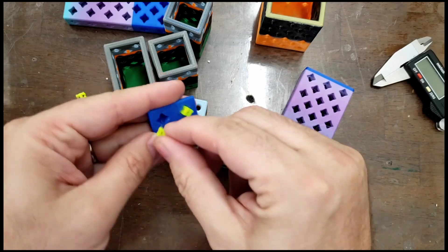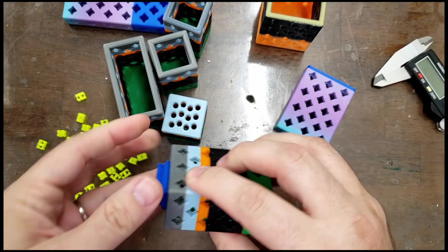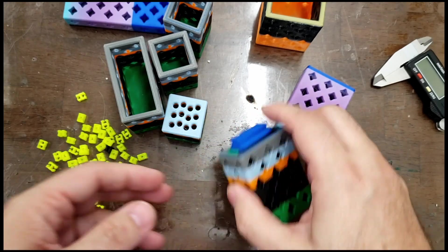There we go. And we'll just put two of those Print-A-Block connectors into the handle here. Pop, pop. So satisfying. And then pop that onto the drawer. And the drawer is now complete and ready to use.